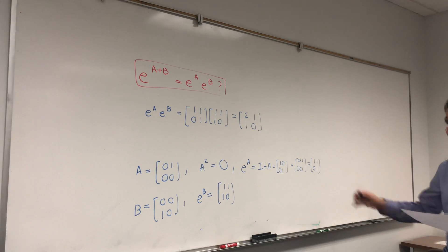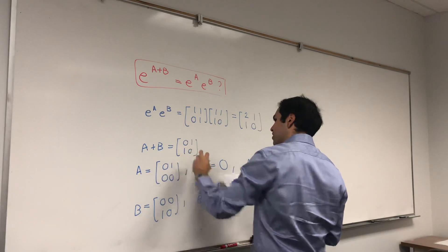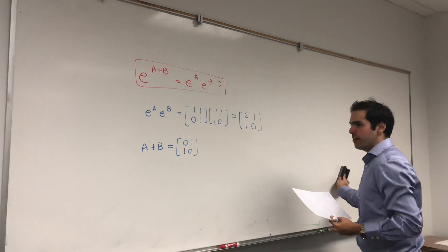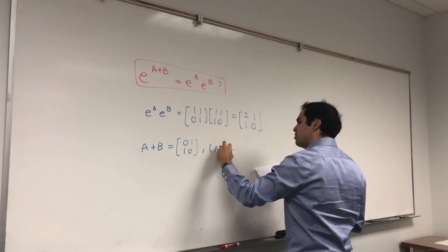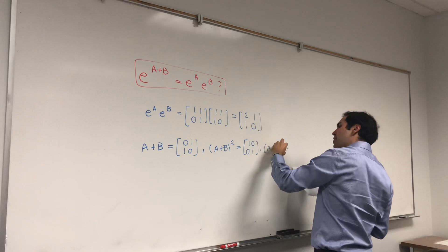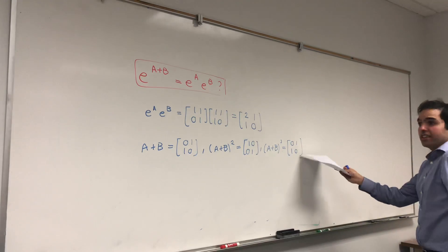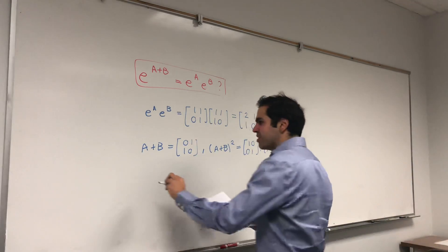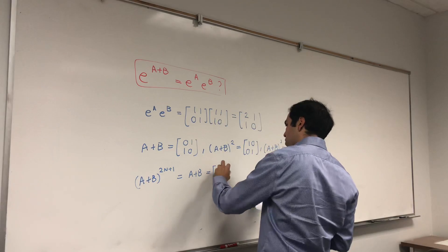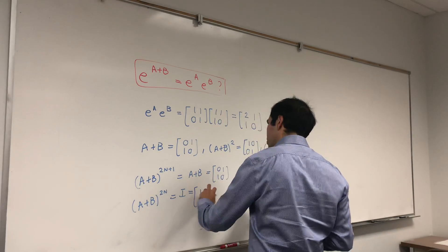On the other hand, let's calculate e to the A plus B. So A plus B is [[0,1],[1,0]]. The cute thing about this matrix is if you square it, you get the identity: (A+B)² = [[1,0],[0,1]]. If you calculate (A+B)³, you get the identity times (A+B), so [[0,1],[1,0]], which is A+B itself. So if you take odd powers of A+B you get A+B back; if you take even powers of A+B you just get the identity [[1,0],[0,1]].